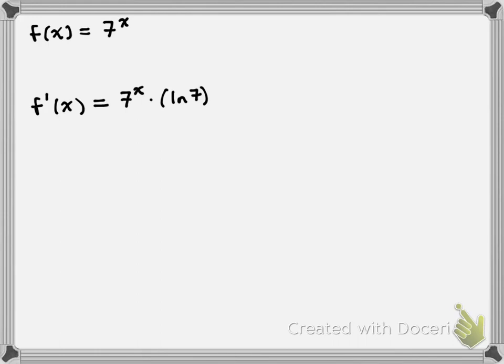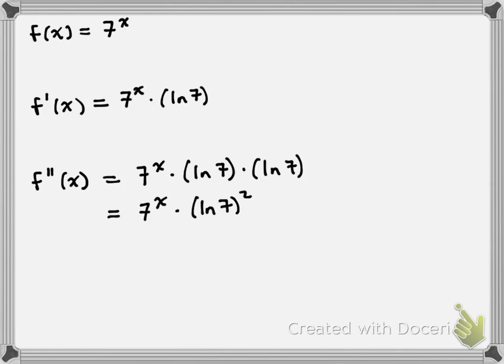Now let's do the second derivative, f double prime of x, to see if we can come up with a pattern. The function we're differentiating now is 7 to the power of x times the ln of 7. Keep in mind that ln of 7 is just some number, so we have a constant multiple of 7 to the power of x. Since ln of 7 is a constant, we write down ln of 7 and multiply by the derivative of 7 to the power of x. That gives us 7 to the power of x times the ln of 7, multiplied by the ln of 7. Notice that I have two factors of ln of 7, so I can rewrite this as 7 to the power of x times ln of 7 squared.